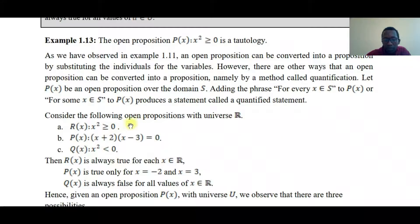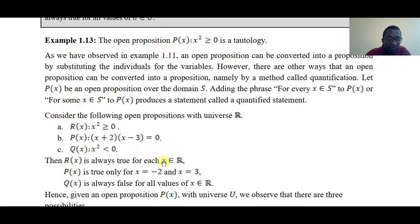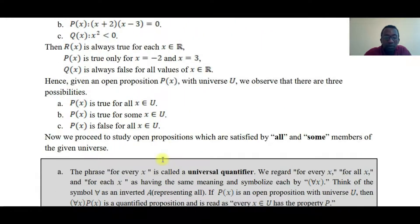Consider the following open propositions. Let p(x) be an arrow function — p(x) is always true for x element of real numbers. Another proposition is true only for x equals −2 and x equals 3, meaning it equals zero only at those points. Q(x) is always false for all values of x, x element of real numbers, for example x² + something less than zero.